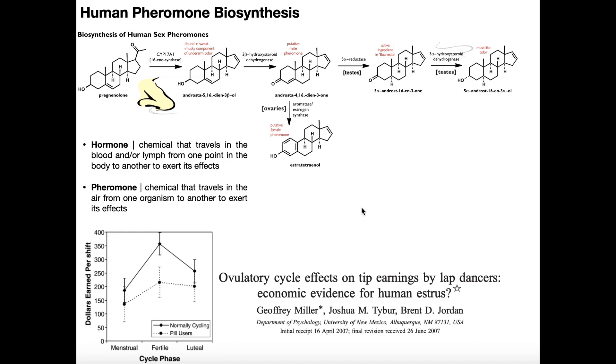And basically what they did is they went to a strip club, I assume, and they looked at all the money earnings on a given night that women earned from the men. And they grouped the women into three groups. There were women who were in their menstrual phase of the menstrual cycle, women in the fertile phase of the menstrual cycle, and women in the luteal phase.